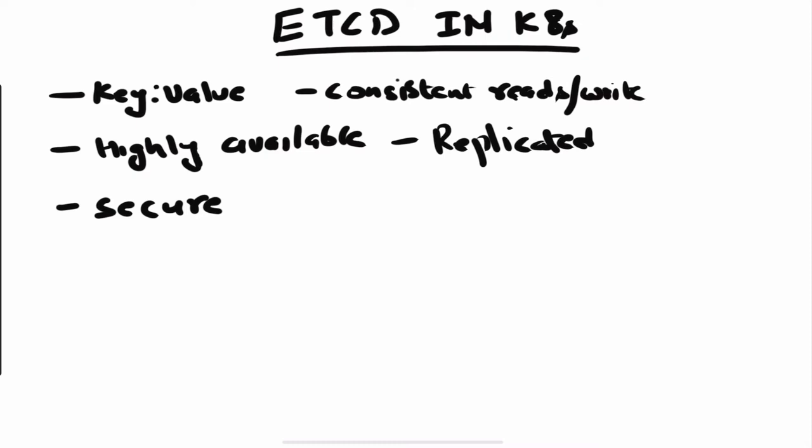Hey guys, welcome back to the channel. In this video we are going to talk about etcd in Kubernetes. etcd is actually like the brain of the Kubernetes system — it stores information about everything happening in the Kubernetes cluster. Any pod you create, any node you add, any deployment you create — all that information is stored in your etcd cluster.